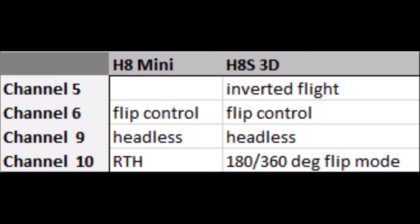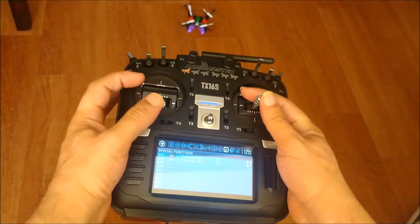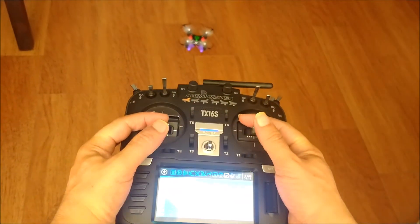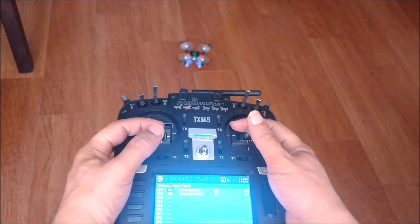We have not been able to set up the radio for the drone to do flips. In any case, in the following image we show the channels that control the special functions of both models of this drone. Now we checked the right behavior of the drone in headless mode. And that is all, thanks.